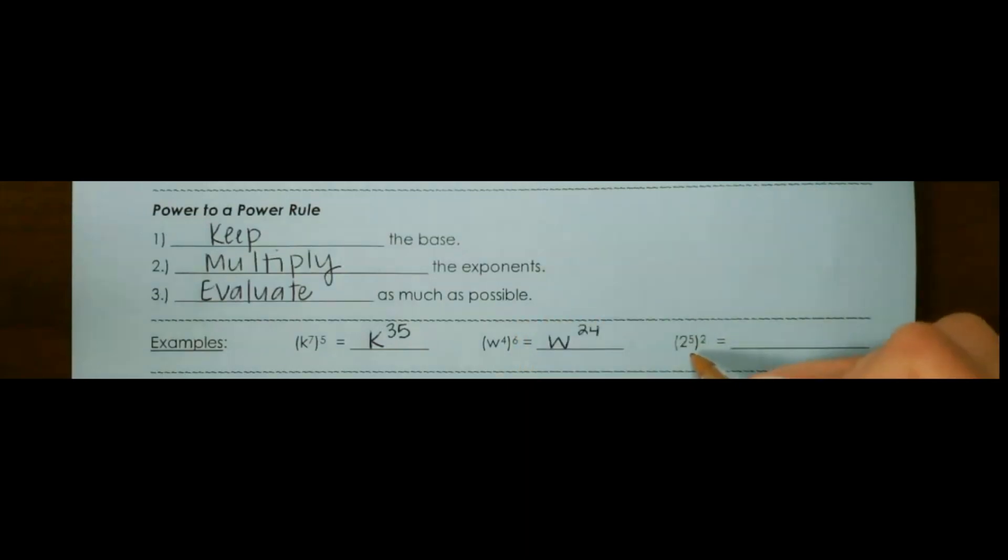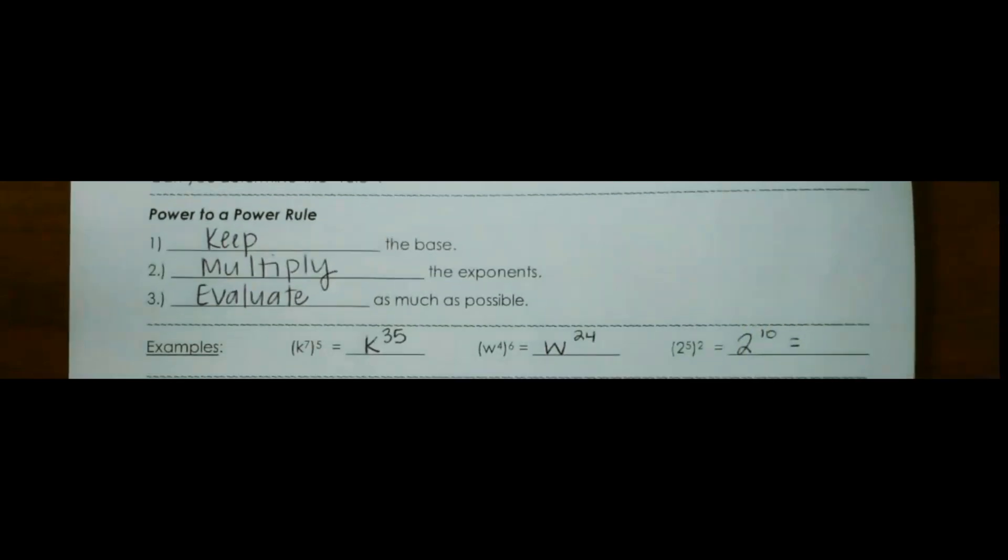And then 2 to the 5th power to the 2nd power is going to be 2 to the 10th, which we can evaluate, and that would give us 1024.